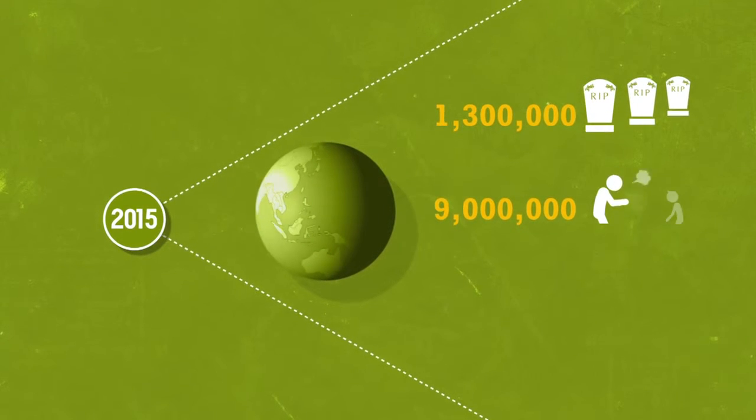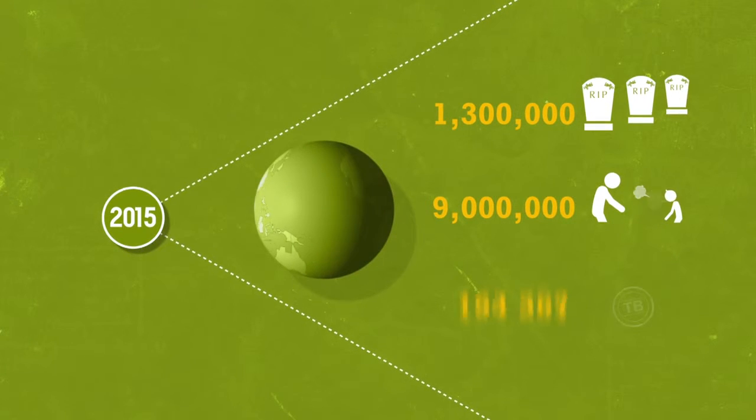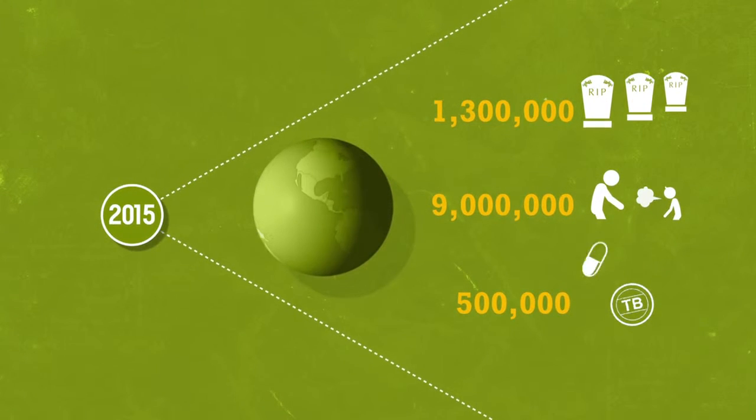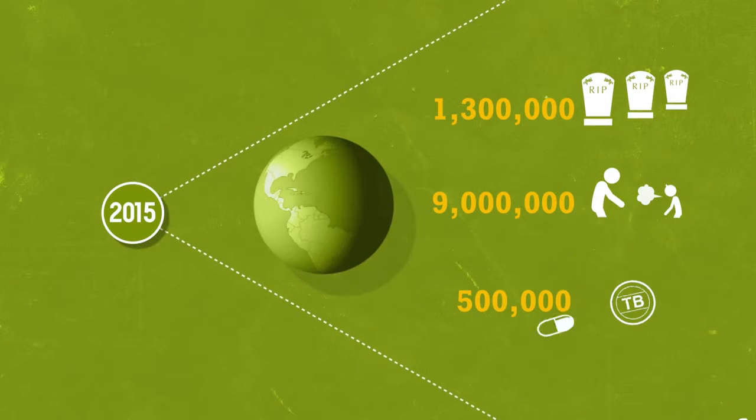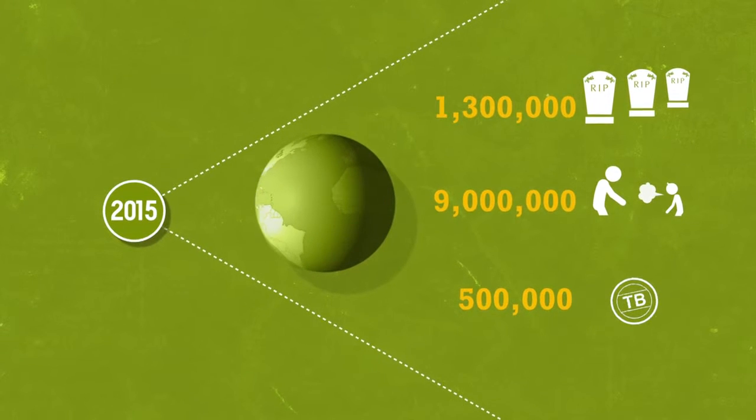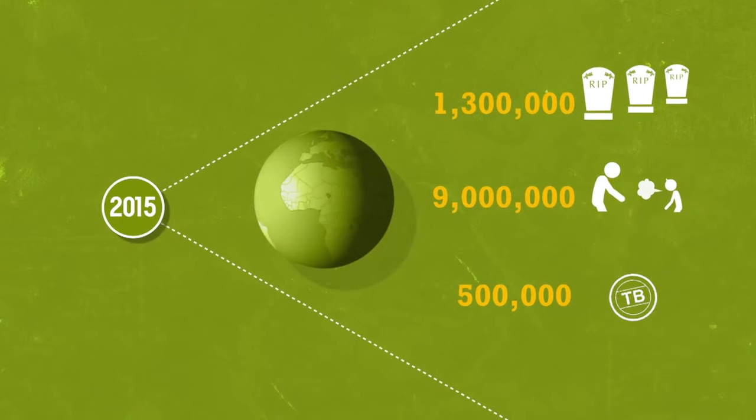9 million fall ill, of which 500,000 with a multidrug-resistant form, meaning antibiotics are ineffective. And these numbers are probably underestimated.